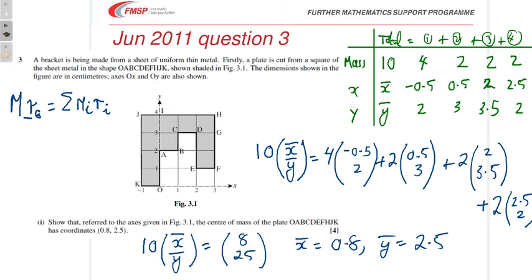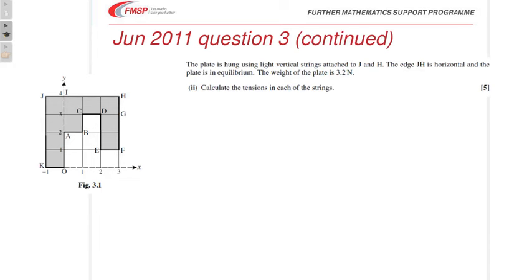For part 2 of the question, it's a bit of a... Oh no, part 2 is hanging it up by strings. And then part 3 returns to the same ideas as part 1. So, there's a diagram of the plate. We're hanging it up by two strings. Here's R, one from J, one from H. Let's show the weight of it here. So, we've got... Let's call that one there T1 and that one T2. The weight of the whole thing apparently is 3.2. There's the centre of mass. We know the coordinates of that from the first part.